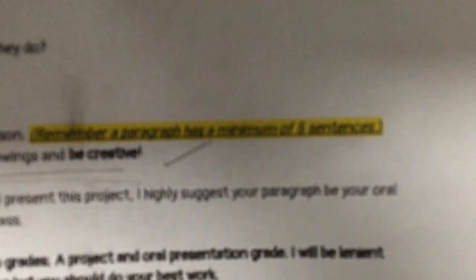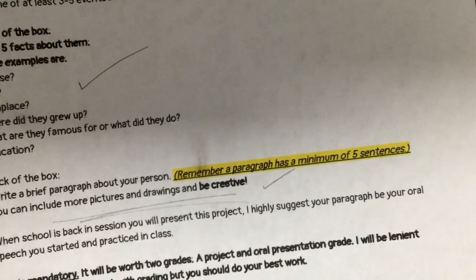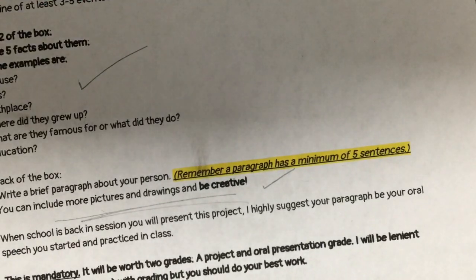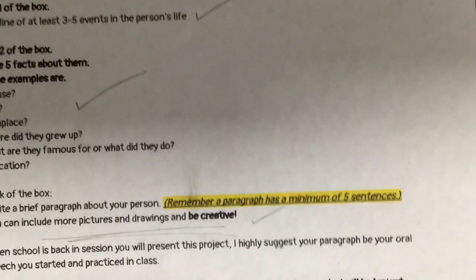Flip your box over to the back. Right here on the back of your box — it's highlighted — remember that you have to write a paragraph, and a paragraph has a minimum of five sentences. That means the least amount of sentences you are allowed to have is five. You may have more. Sixth graders, I expect you to have more, honestly, because you're capable of an eight-sentence paragraph. But five is the minimum.